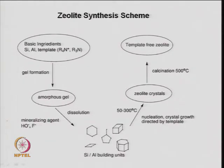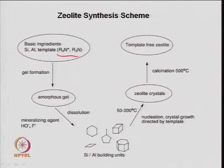Look at the flow sheet for zeolite synthesis - a typical flow sheet. The basic ingredients you need are some silica source, some aluminum source, and some templating agents - it may be quaternary amines, propylamines, isopropylamine groups. These can be the templating or structure-building agents.